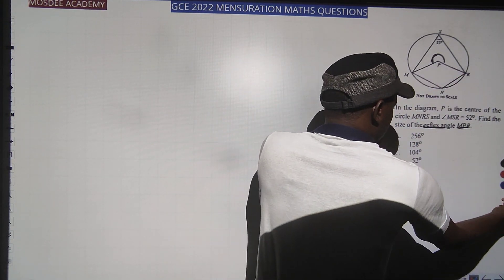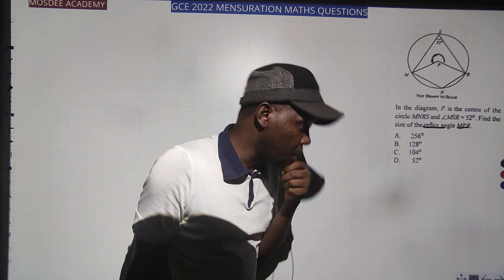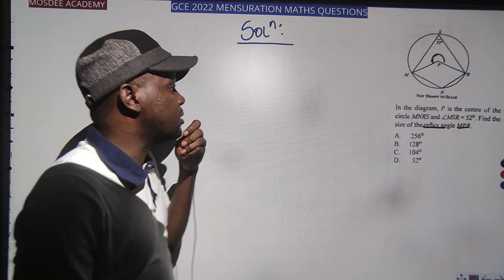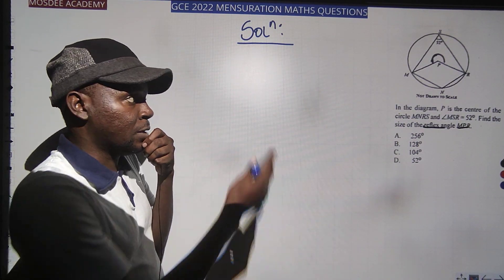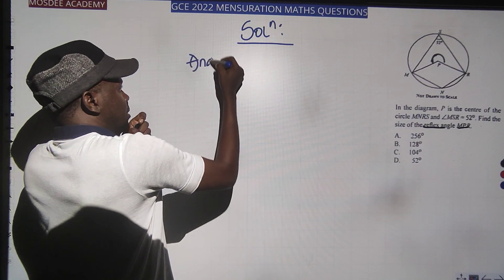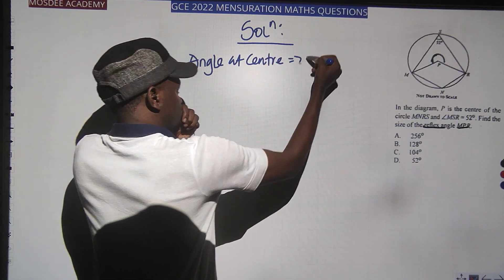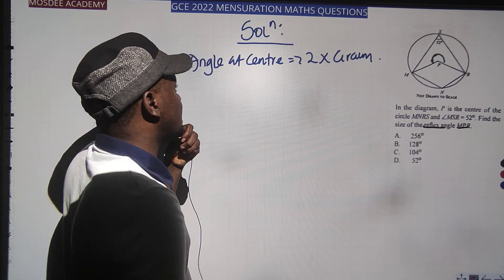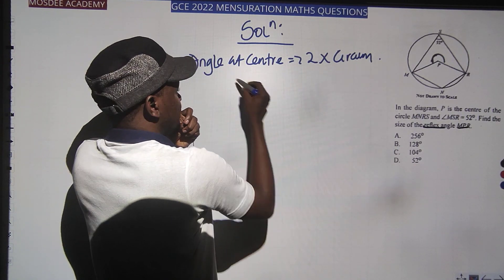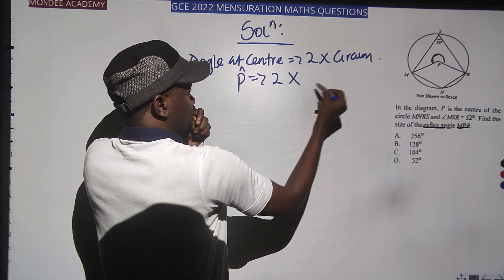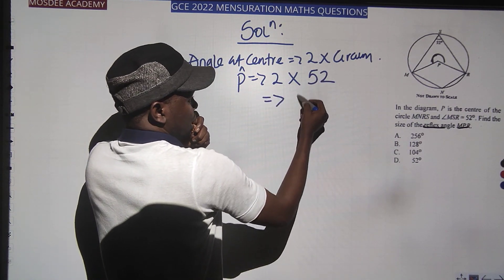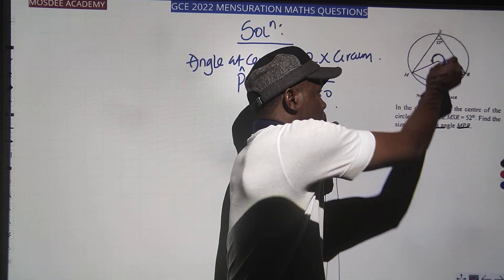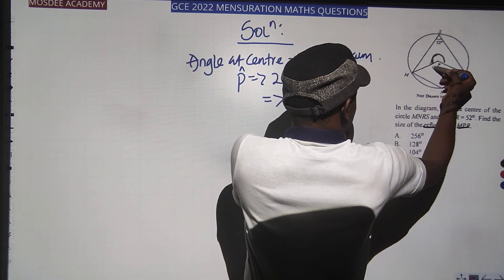We are looking for angle MPR. From the solution: 52° is at the circumference. Using the theorem — angle at center equals 2 times circumference — angle P equals 2 times 52, which is 104°. Remember the question asks for the reflex of MPR, which is the angle on top. So if the non-reflex is 104°...